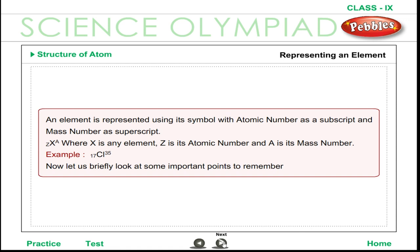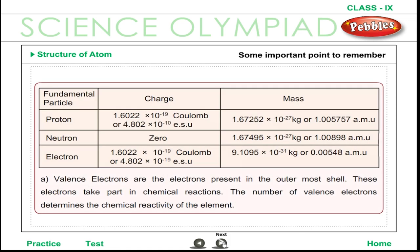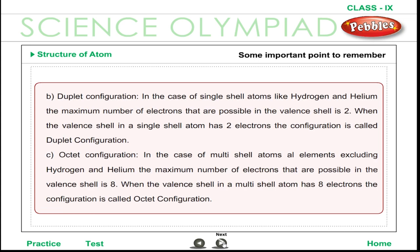Some important points to remember: Valence electrons are the electrons present in the outermost shell; these electrons take part in chemical reactions, and their number determines the chemical reactivity of the element. In the case of single-shell atoms like hydrogen and helium, the maximum number of electrons possible in the valence shell is 2 — when the valence shell has 2 electrons, this is called duplet configuration. In the case of multi-shell atoms, the maximum number of electrons in the valence shell is 8 — when the valence shell has 8 electrons, this is called octet configuration.